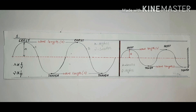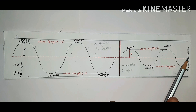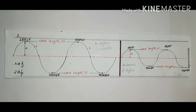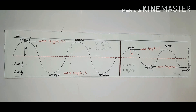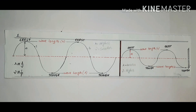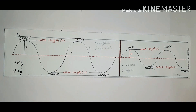Frequency is the number of cycles passing through a given point in a given time, or the number of cycles completed in one second. One more quantity associated with waves is time period. Time period is the time taken for one cycle to pass through a given point. The time period for a smaller cycle may be less and for a bigger wave may be more.